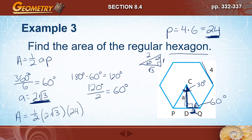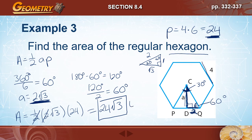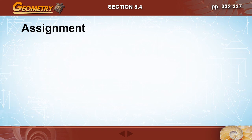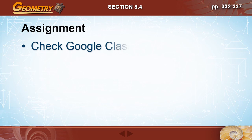With apothem 2√3 and perimeter 24, area = ½ × 2√3 × 24 = 24√3 square units. Leaving the answer as 24√3 gives an exact value rather than a rounded decimal approximation. That concludes this lesson — your assignment will be posted on Google Classroom.